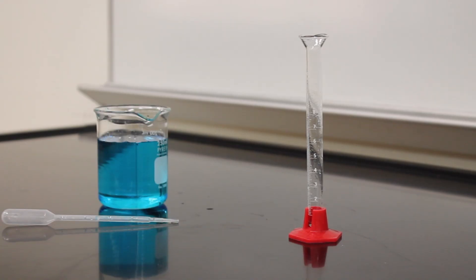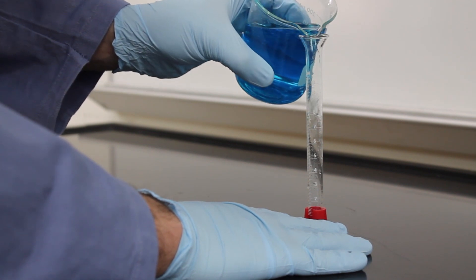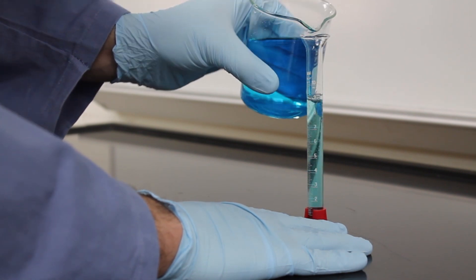A 10 milliliter graduated cylinder follows the same exact procedure. Fill and use a dropper to get the volume right where you want it.